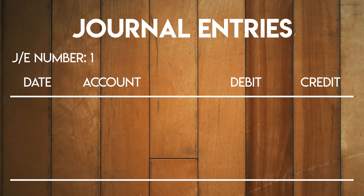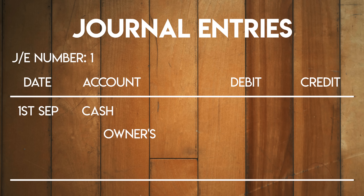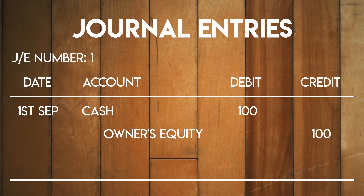First we have the journal number — this is a unique reference number used to identify the journal. Then there is the journal entry date, which is the date that the journal is posted in the general ledger. It's important because it affects the accounting period that the transaction is going to show up in. Next we have the names of the accounts that are impacted by the journal — in this case, cash and owner's equity. Notice that owner's equity is indented; we indent the name of the account that is getting credited so that it is easier to see. Then we have separate columns for all of the debit and credit entries.